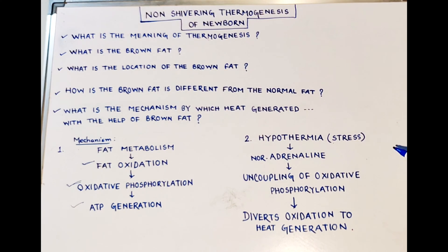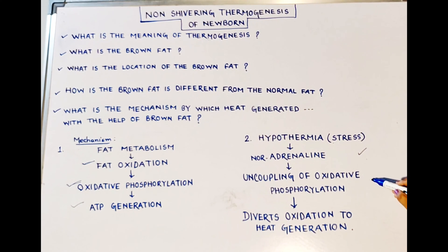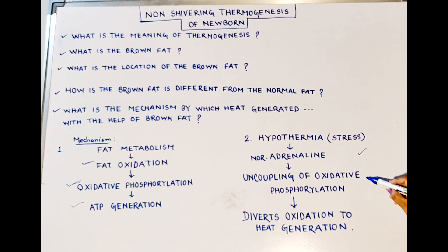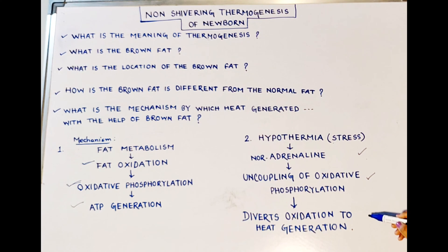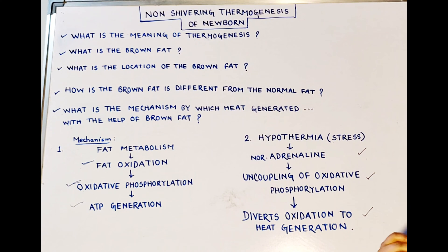But when the baby is exposed to hypothermia, it acts as a stress for the baby. The stress results in the release of stress-related hormones, i.e. catecholamines like adrenaline and noradrenaline. Here, noradrenaline is going to break up this process, and in this way the baby can generate heat production with the help of brown fat.